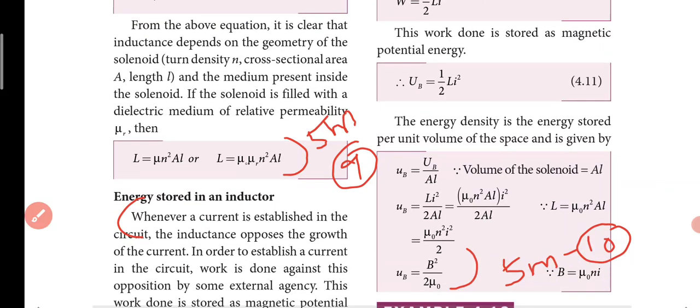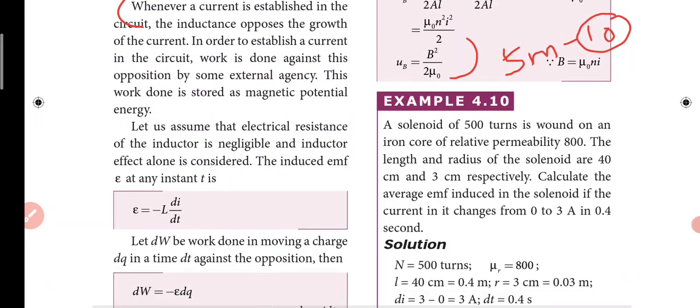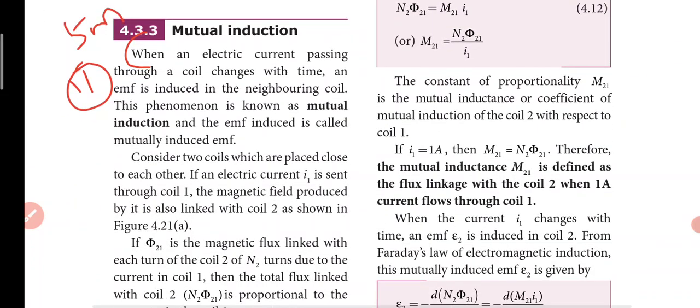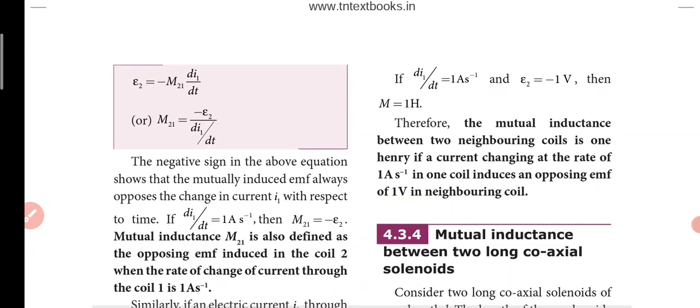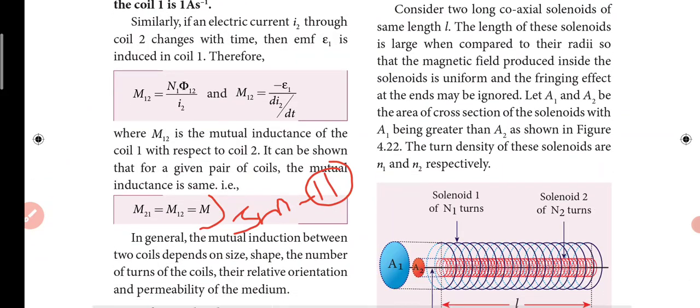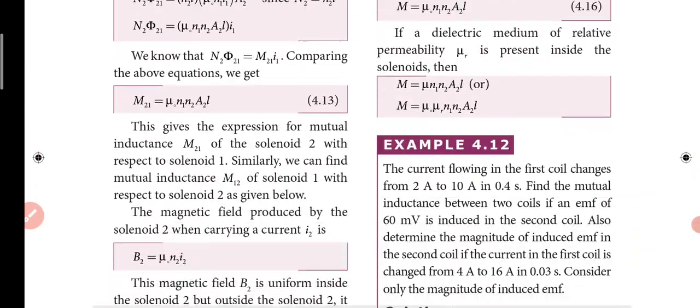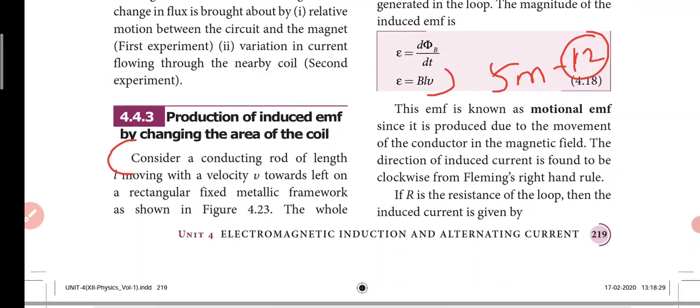Tenth question: important 5 mark - energy stored in the inductor. Path for mutual induction: 11th question with diagram showing M12 equals M21 with proof.